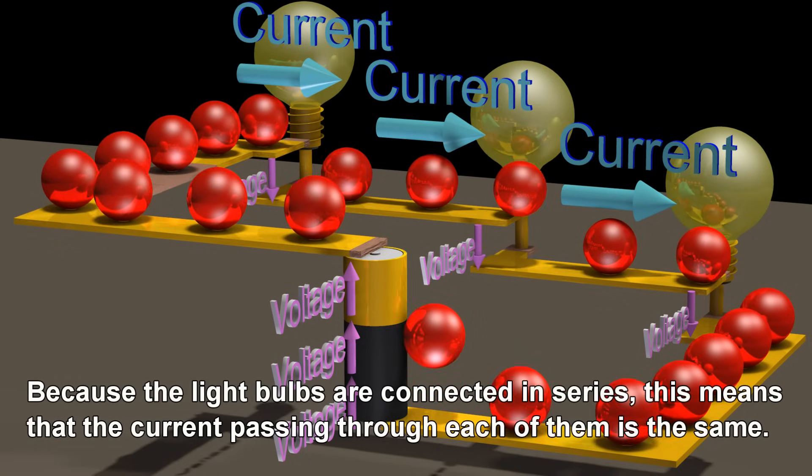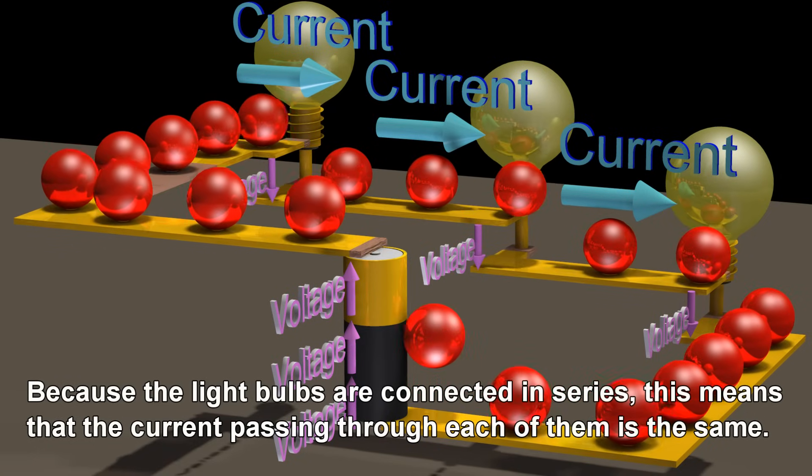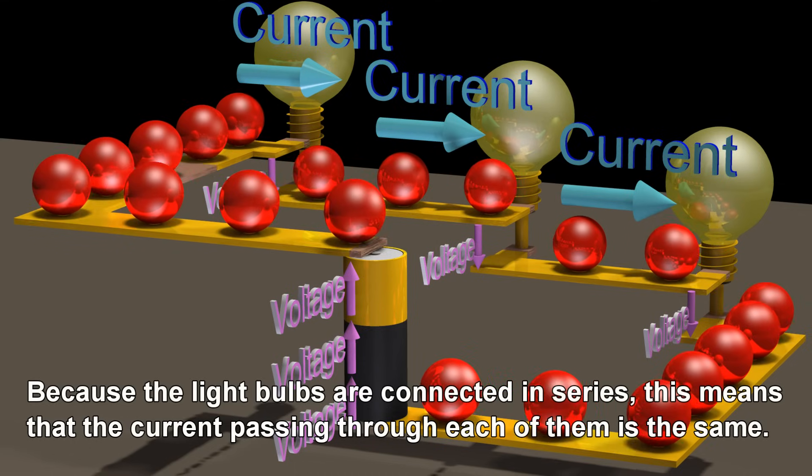Because the light bulbs are connected in series, this means that the current passing through each of them is the same.